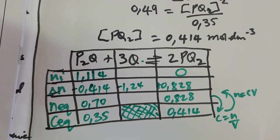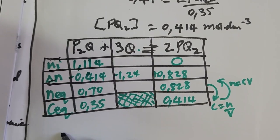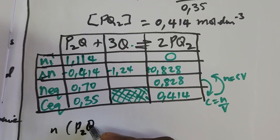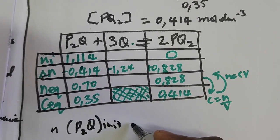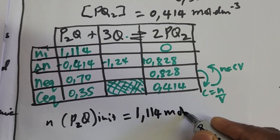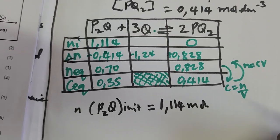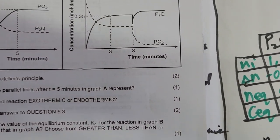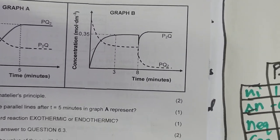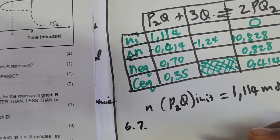Adding the change back to the equilibrium moles gives the initial moles. Therefore, the initial moles of P₂Q equals 1.114 mol. That is option 2 — but this is technically incorrect because the graph starts from 0, so the examiner made a mistake there.